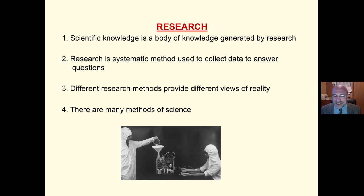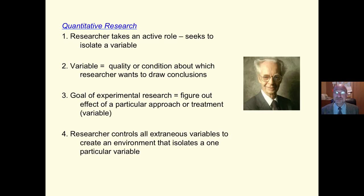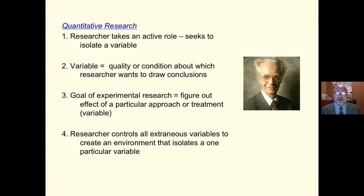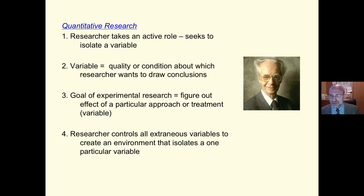This big idea: there is no such thing as the scientific method — there are methods of science. Quantitative research, to give a brief overview, is where the researcher takes an active role to try to isolate a variable, setting up an artificial world. A variable is a quality or condition about which the researcher wants to draw conclusions.